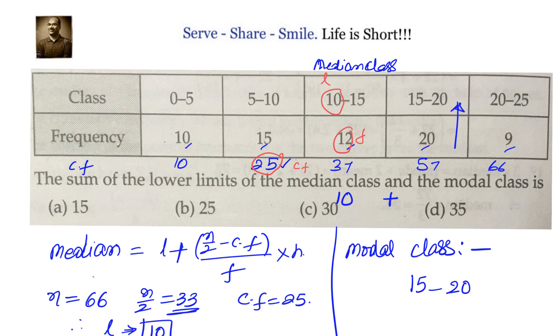So modal class is 15 to 20. Lower limit here is 15. So modal class lower limit is 15 and median class lower limit is 10. So our solution will be 10 plus 15 which equals to 25, and option B is the correct option.